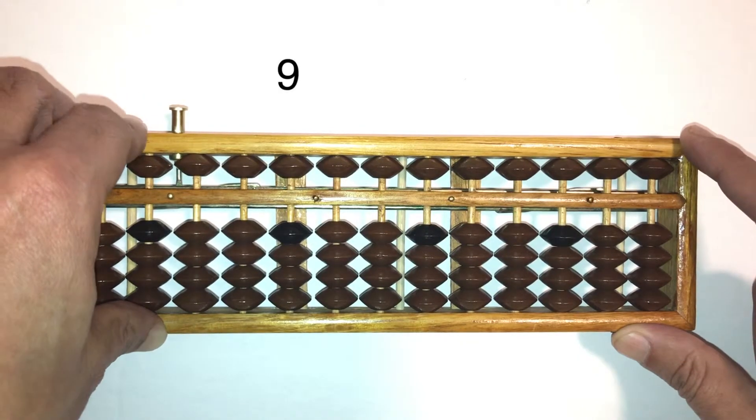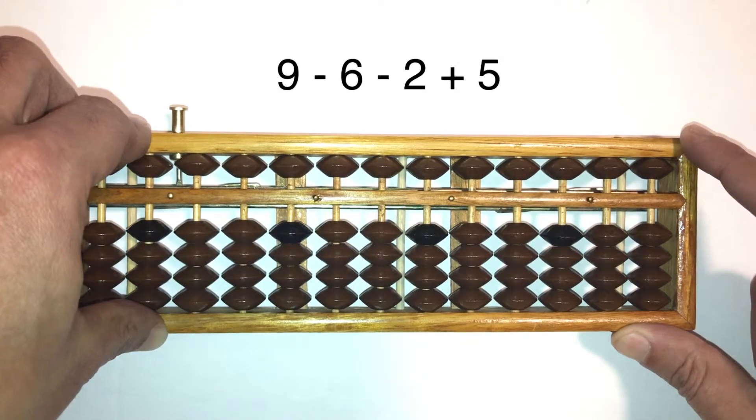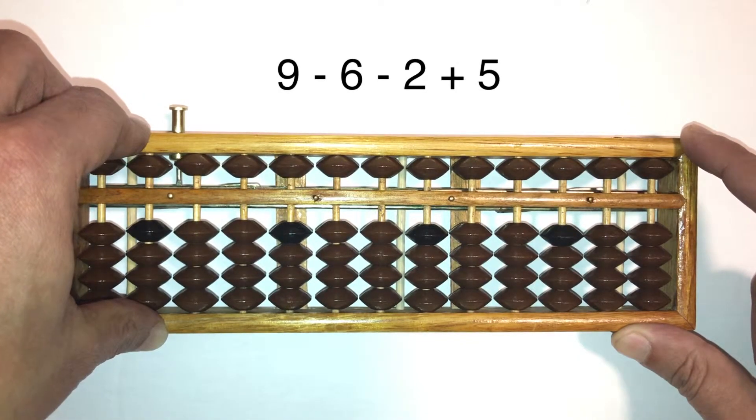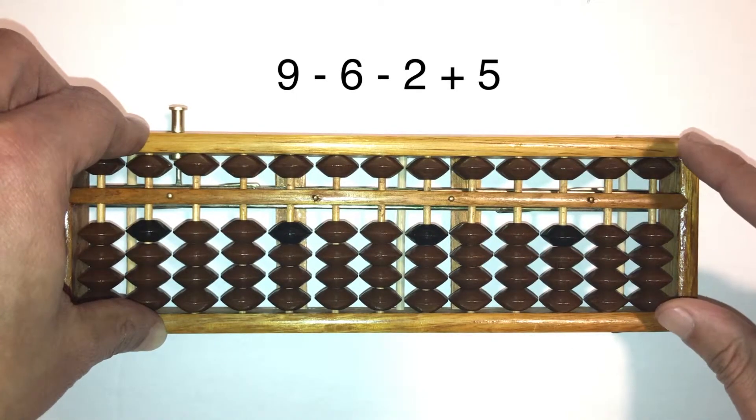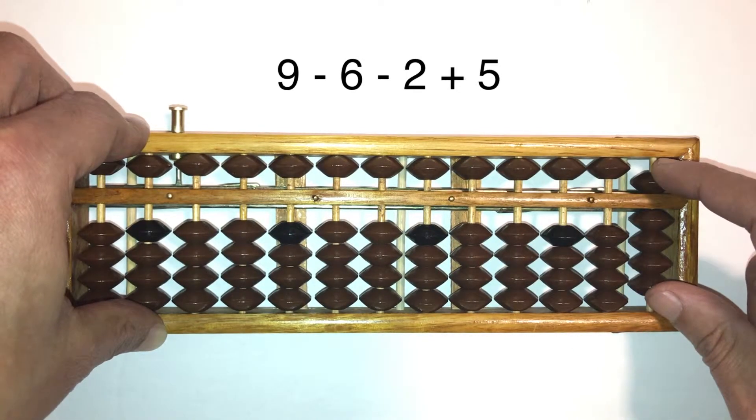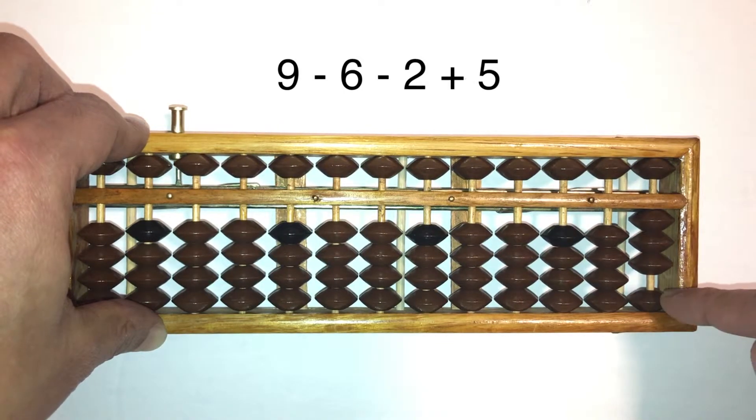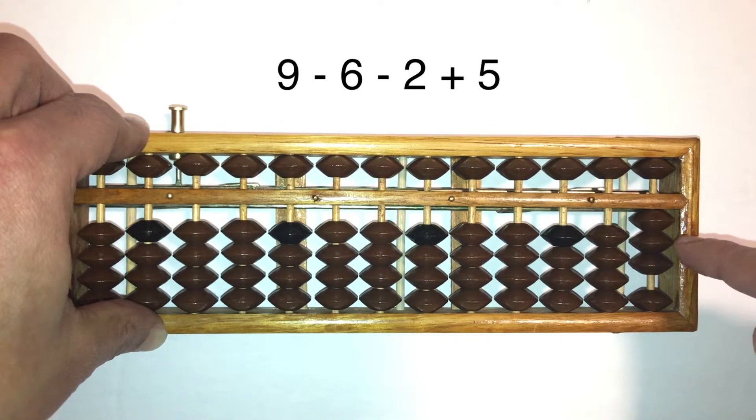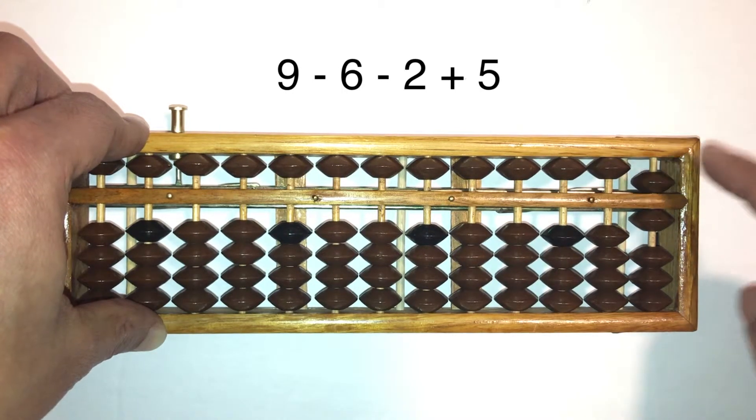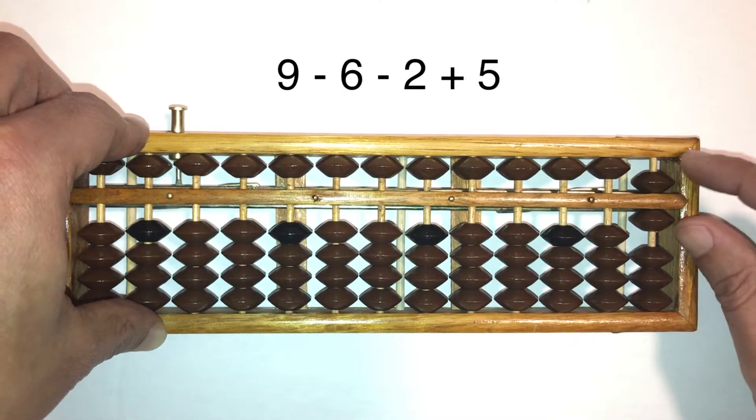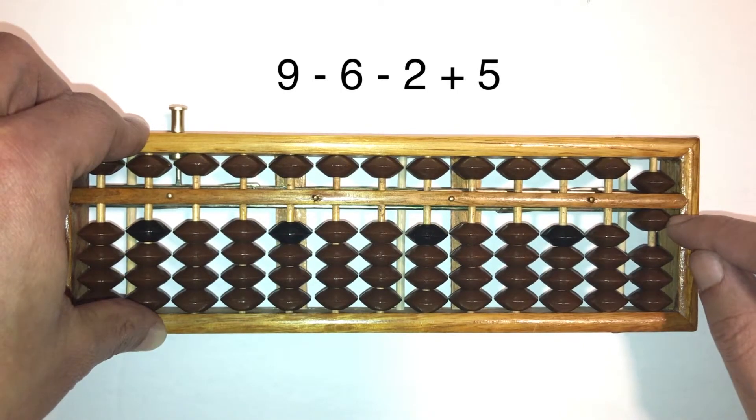All right, so with that knowledge, let's solve another question. Let's do 9 minus 6 minus 2 plus 5. Here we go: 9, take away 6, so I took away the 5, took away the 1, minus 2, take away 2, plus 5. What's your answer? Answer is 5 and 1, which is 6.